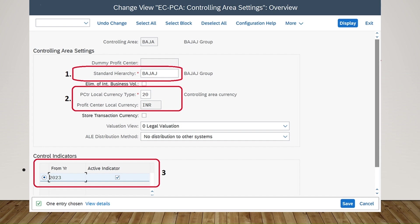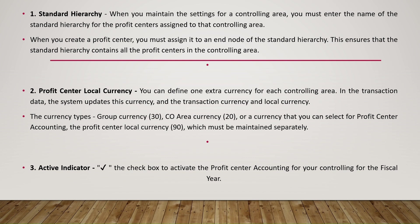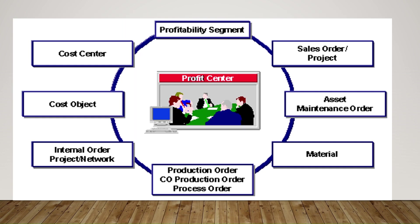In the standard hierarchy, you maintain settings for a controlling area and must enter the name of the standard hierarchy for profit centers assigned to that controlling area. In profit center local currencies, you can define one extra currency for each controlling area; the system updates this currency along with the transaction currency and local currency. The active indicator check mark activates profit center accounting for that specific fiscal year.